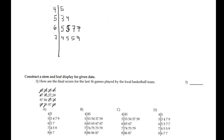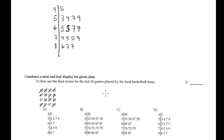I forgot 57 here — adding 57 to the 50s row. Then stem 8: 86 once and 87 twice. Also forgot 59 — adding 59, 59, 59 to the 50s row. And that corresponds with the given data.